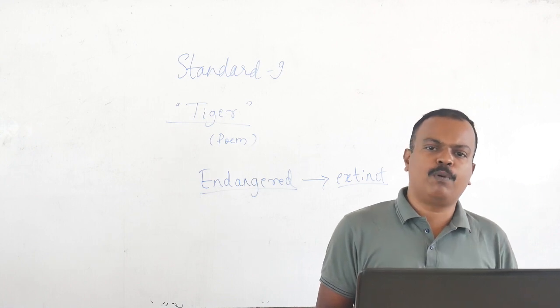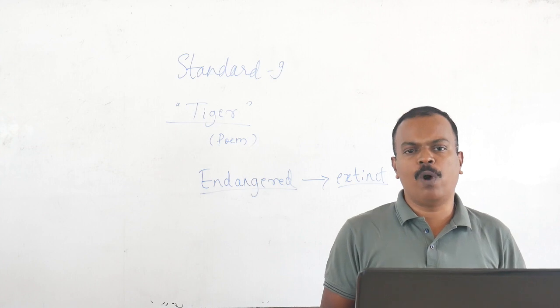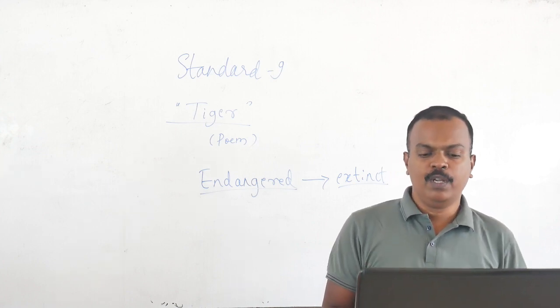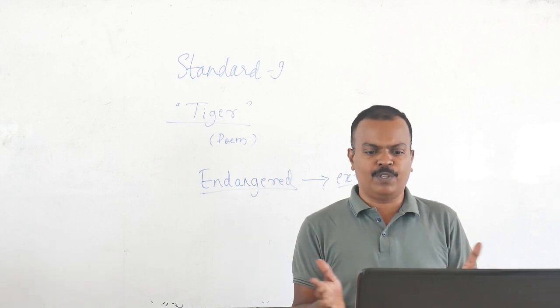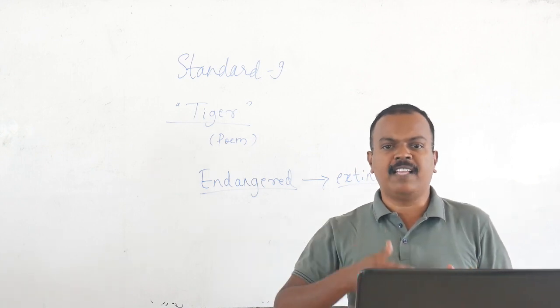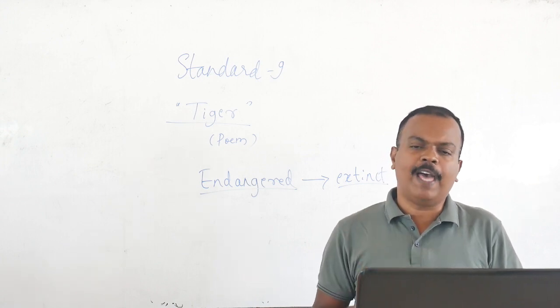Only 4,000. Do you know what this number was like 100 years ago? It was more than one lakh. That is 100,000. More than 100,000. From more than 100,000, the population of tigers has decreased so much. And today we have only 4,000 of them.